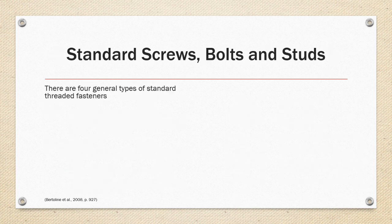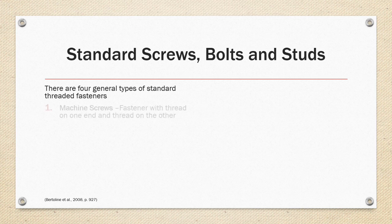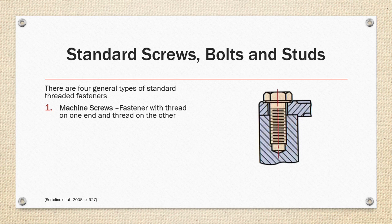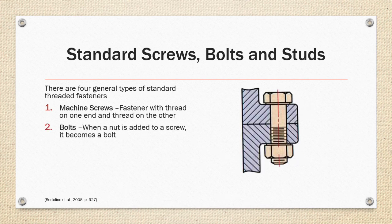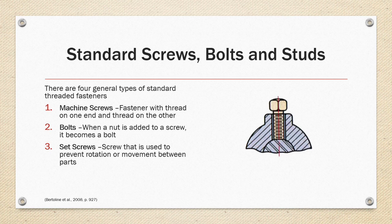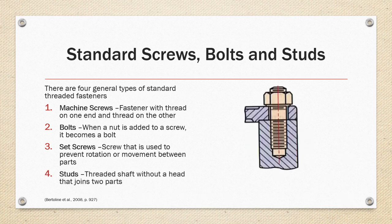There are four general types of standard threaded fasteners. Machine screws, fasteners with a thread on one end and a head on the other to drive the screw. Bolts, which are when a nut is added to a screw it becomes a bolt. Set screws that are used to prevent rotation or movement between parts. And studs, a threaded shaft without a head that joins two parts. The textbook talks about five types but I have collapsed the cap head screw and the machine screw into the same category.